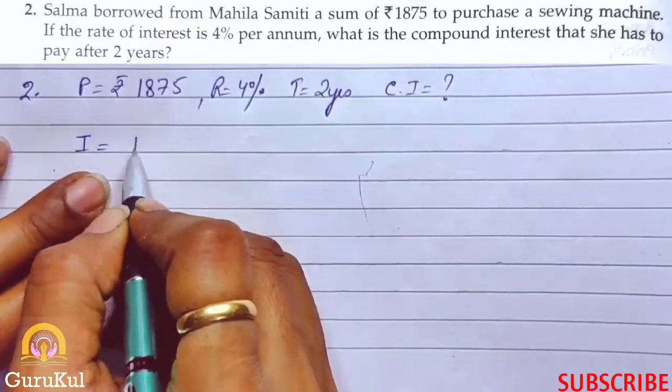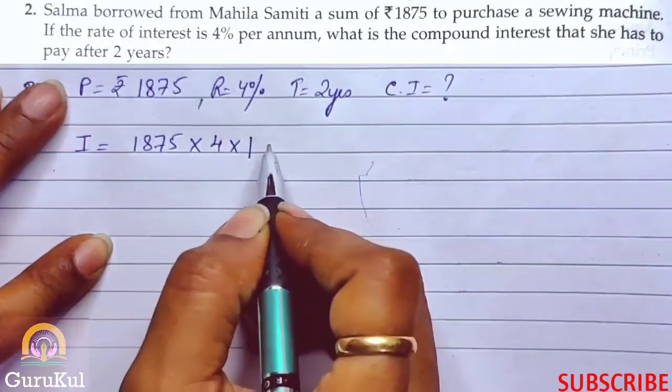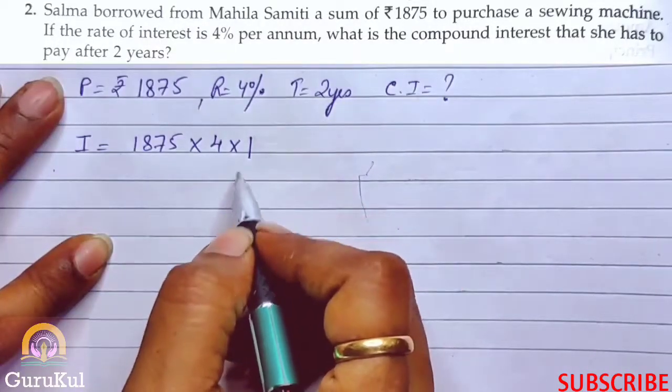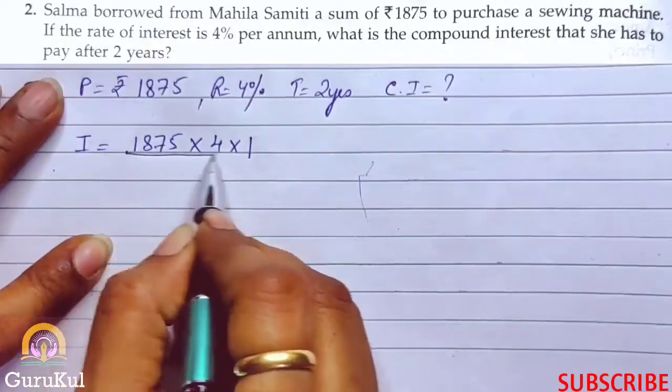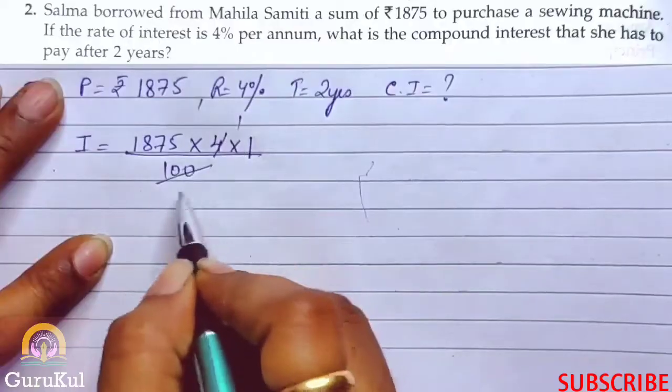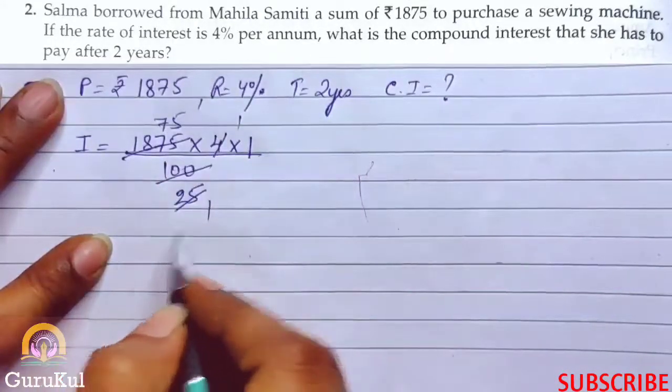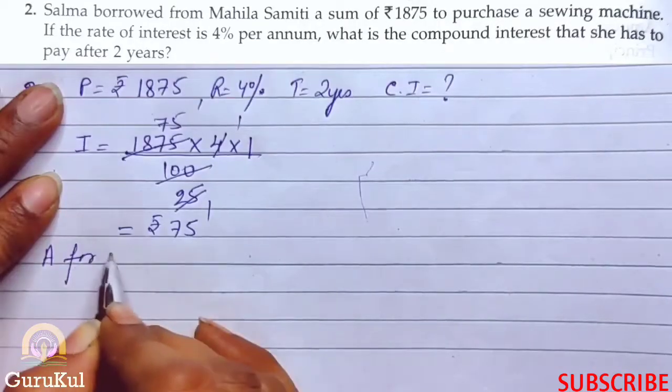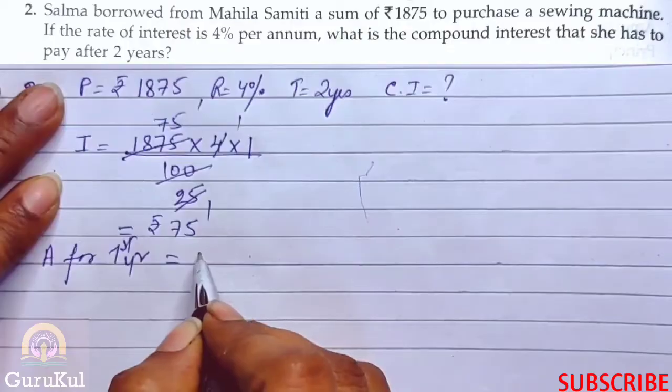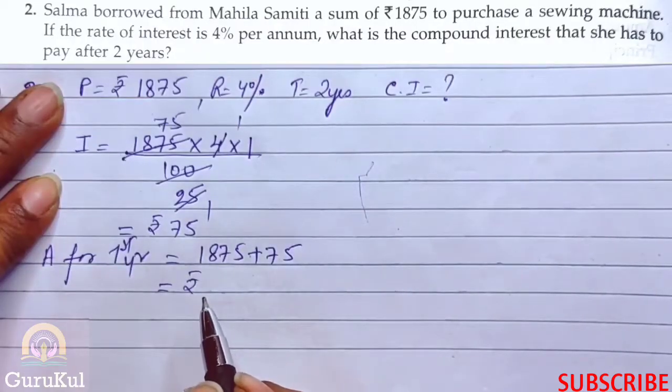First we calculate interest. Remember, to find compound interest we calculate annually. So P is 1875 into rate 4 into time 1 year by 100. So our interest is ₹75. Amount for first year is 1875 plus 75, that gives us the amount of ₹1950.